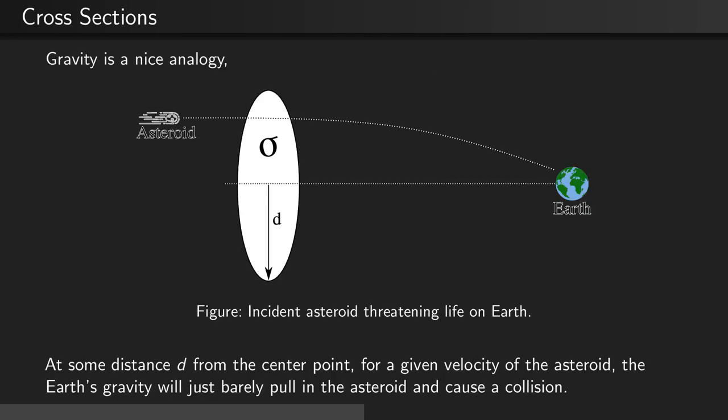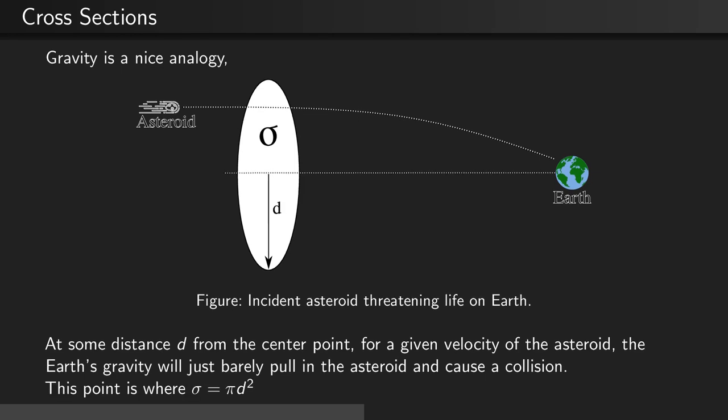Gravity serves as a nice analogy for cross-sections. Suppose you have an asteroid that is potentially on a collision course with Earth. At some distance d from the center point, for a given velocity of the asteroid, the Earth's gravity will just barely pull the asteroid in and cause a collision. The point at which this occurs is where the cross-section equals π times this distance d from the center point squared.